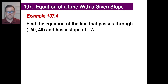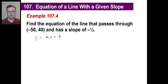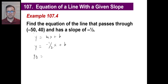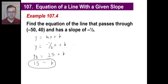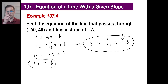Let's try another one — pause it and give it a whirl. The first thing we write is y equals slope x plus y intercept. The slope is negative 1 half, so y equals negative 1 half x plus b. There's our x at negative 50 and y at 40. A negative times a negative is positive, and half of 50 is 25. So 40 equals 25 plus b, meaning b equals 15. Therefore y equals negative 1 half x plus 15. The y intercept is at 15 and the line goes down to the right.